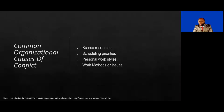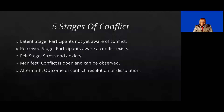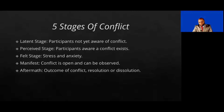There are five stages of conflict. The latent stage, where participants are not yet aware of the conflict. The perceived stage, where participants are aware that a conflict exists. The felt stage, where there is stress and anxiety. The manifest stage, where conflict is open and can be observed between two people or more. And then the aftermath, which is the outcome of a conflict — the resolution or dissolution.